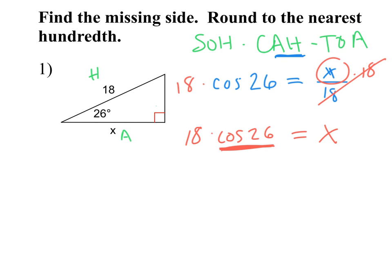Make sure your calculator is in degree mode — access the mode button and double-check right now. Type in cosine 26 and see what you get. In degree mode you should get approximately 0.8987940463, which I'll round to 0.8988 so you can see what we're doing. It should be a decimal less than one, because the adjacent is always shorter than the hypotenuse — the longest side. Now type times 18.